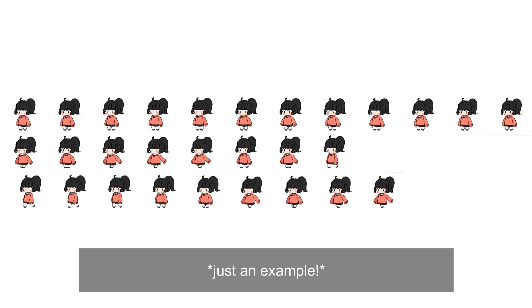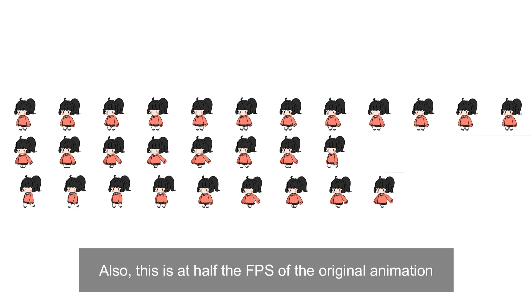And this is what that sprite sheet would look like. And this is for only two animations — the idle animation and the walking animation. If you wanted to add more, it would add megabytes for the player to download, and also adds to the memory usage of your game.